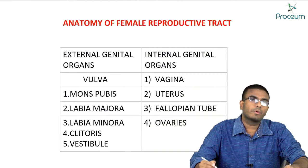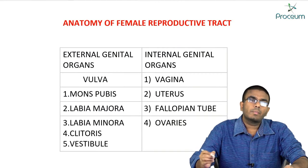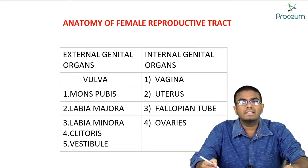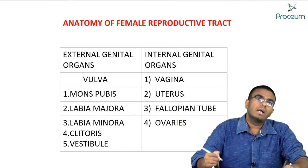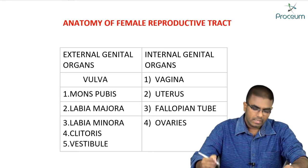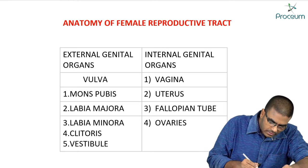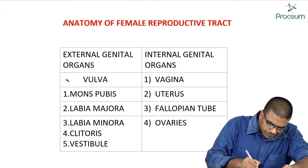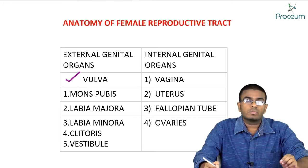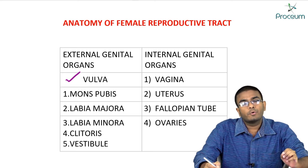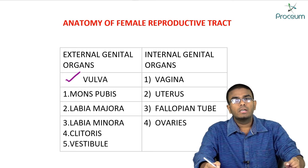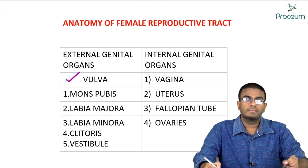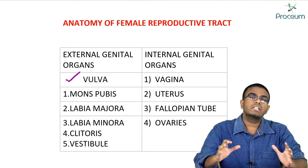Today let's discuss the anatomy of the female reproductive tract. The female reproductive tract includes two groups of organs: external genital organs and internal genital organs. The first topic we will be discussing is the vulva. Vulva includes the mons pubis, labia majora, labia minora, clitoris, and vestibule.